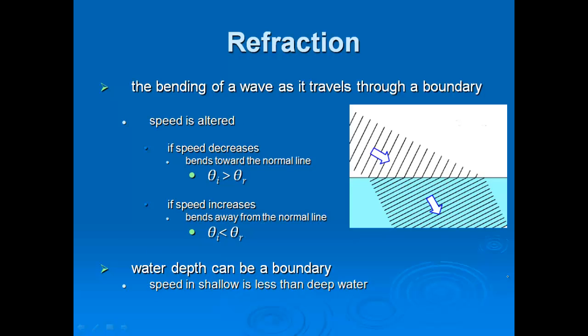Refraction is the bending of waves as it travels through a boundary. If you've ever tried to dive for things in the pool, where they appear to be isn't necessarily where they are when you go into the water because light is being bent as it goes from air into the water. If the speed's altered, if it decreases, then it bends towards the normal line. If it increases, it bends away from the normal line. Even the depth of the water or salinity can be effective. Mirages are a reflection and refraction because of the different heat temperature, the heat content of the air.